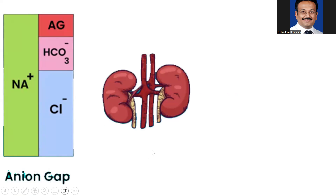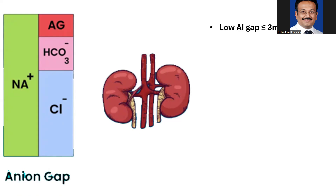Just to recap: as we know the anion gap — keep this picture in your mind, it will make understanding a little easier. This is a five-minute talk so it's not elaborate. As you see, the anion gap is shown in red — sodium minus chloride plus bicarbonate equals the anion gap. We call it a low anion gap if it is less than or equal to 3 milliequivalents per liter.